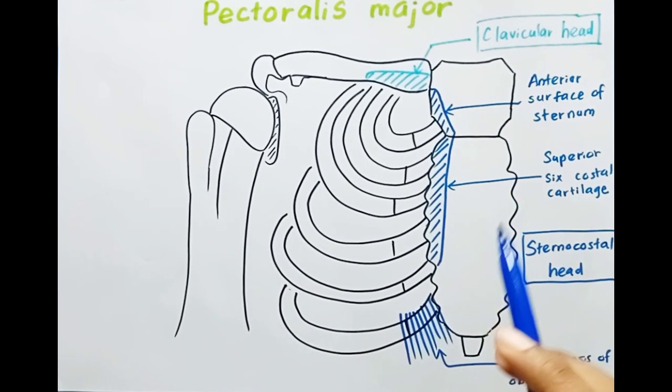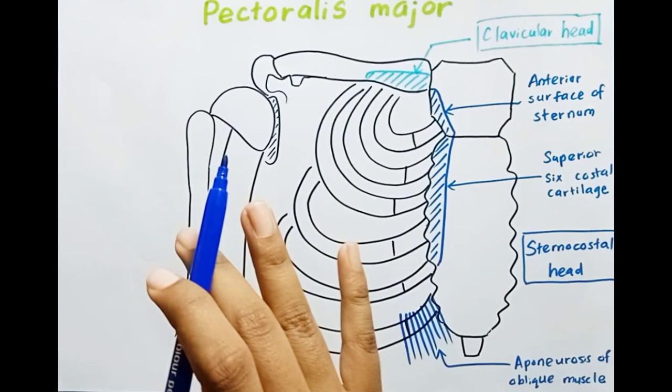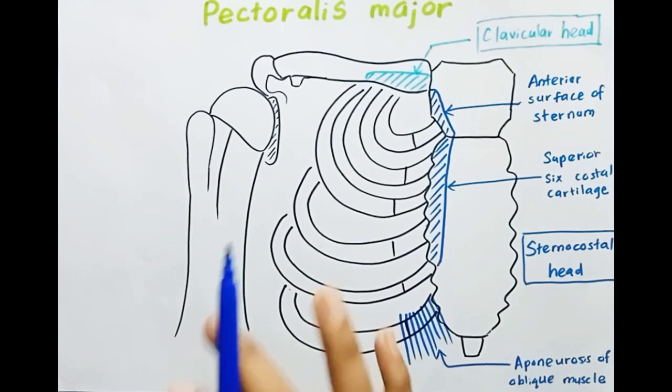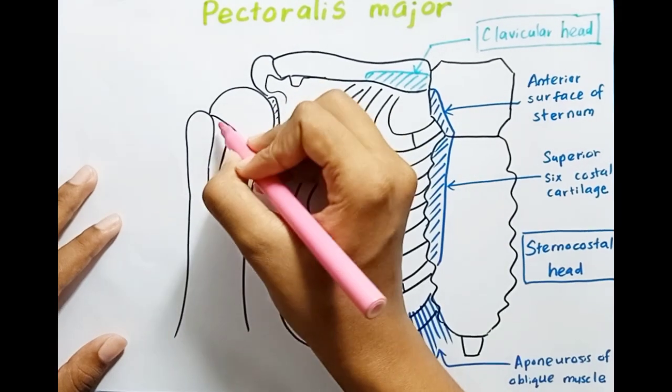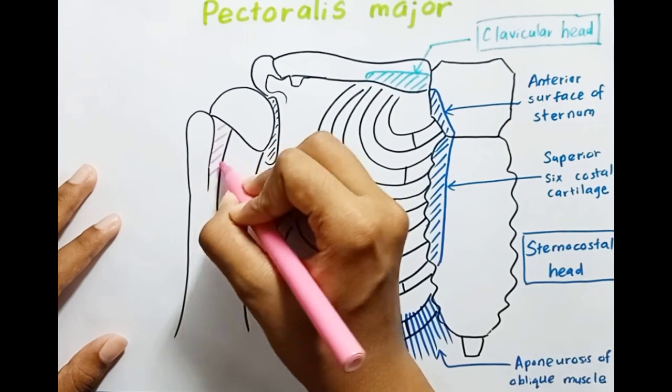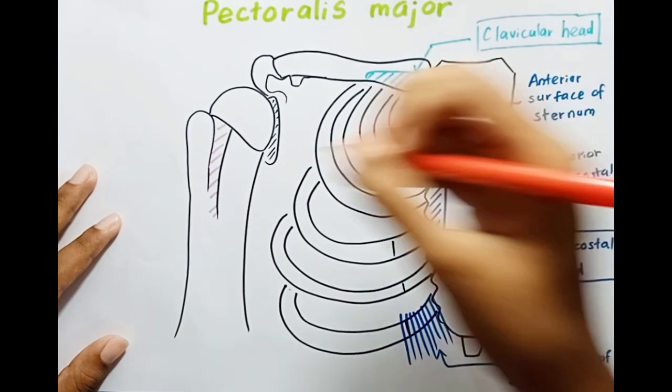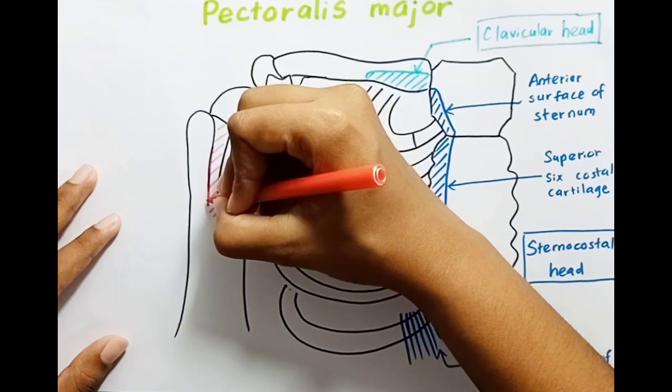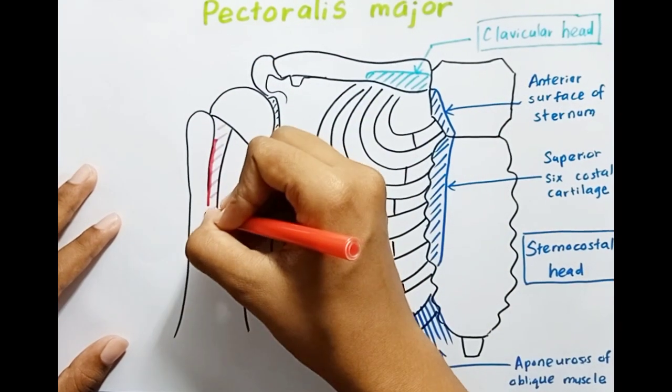Then the pectoralis major muscle gets inserted into the intertubercular sulcus of the humerus. So this is the intertubercular sulcus. Here you can see the lateral lip of this intertubercular sulcus.